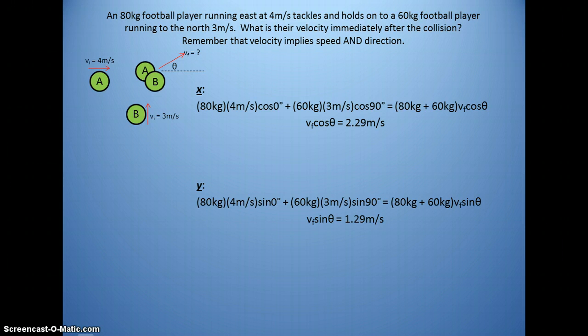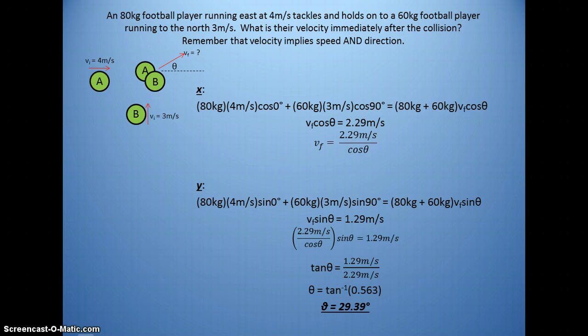So at this point, we're left with two equations and two unknowns. It's going to require substitution. What I would really suggest doing is solving for VF in the x-axis. And you'll be left with 2.29 meters per second over cosine theta. And then you can substitute this in for the VF in the Y. You've seen this before. Sine over cosine is tangent. So we rearrange. We get tangent of theta is 1.29 over 2.29. Where theta is the inverse tangent of 0.563. And we get that theta is 29.39 degrees. So this is the direction they are moving.